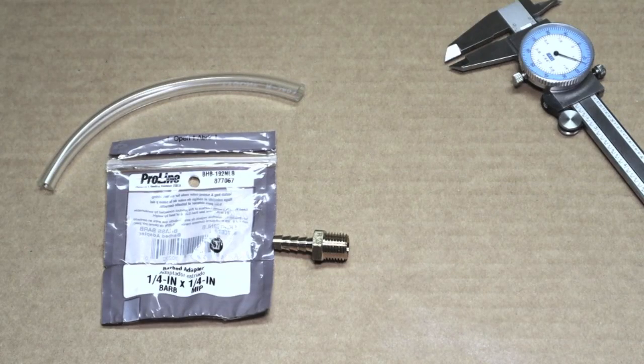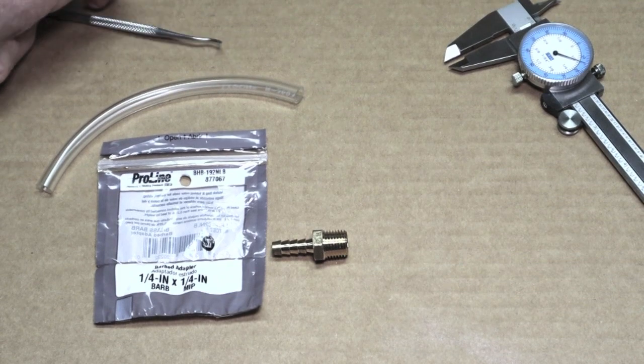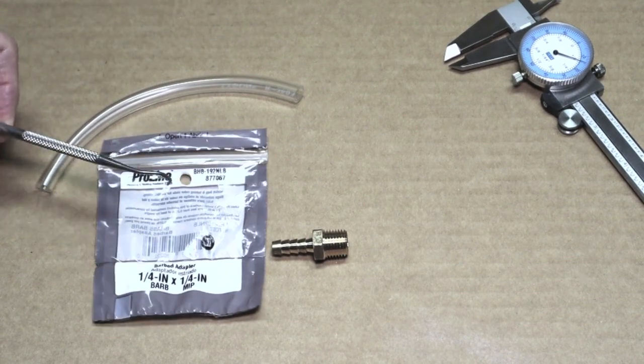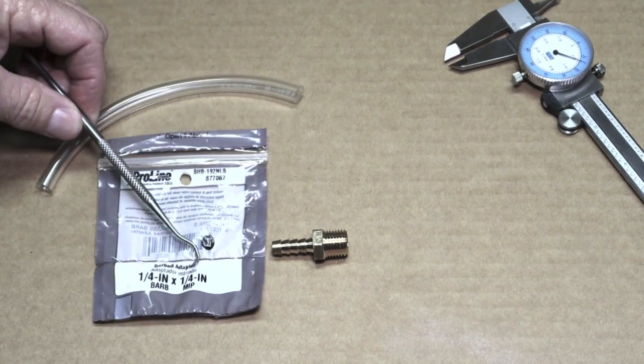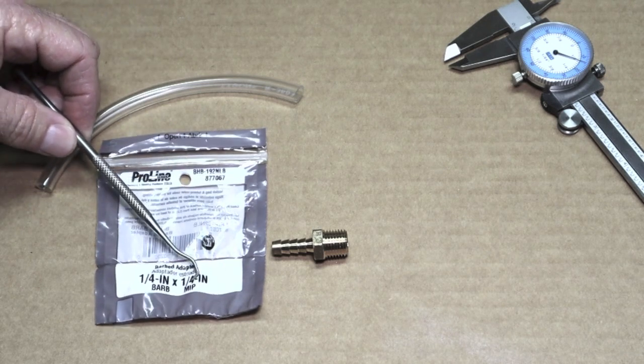We're going to thread a one and a half inch piece of PVC pipe. In this particular one, it's one quarter inch barbed. The threads are one quarter inch MIP. MIP stands for male iron pipe.